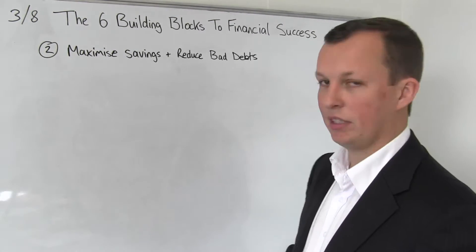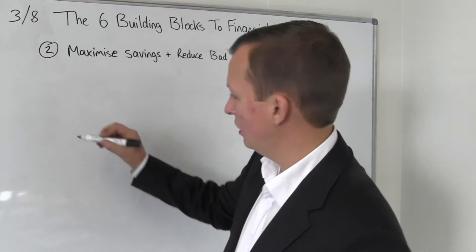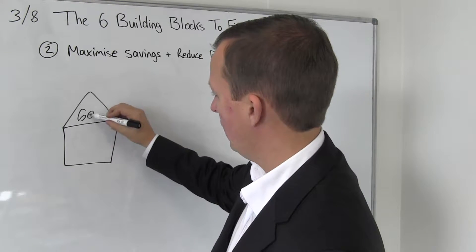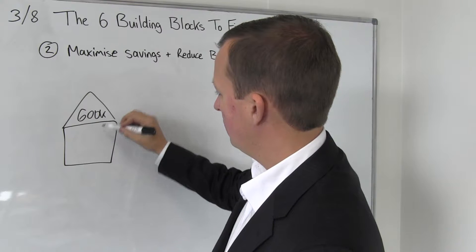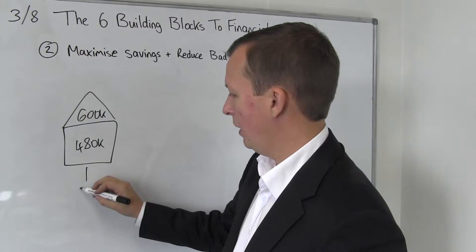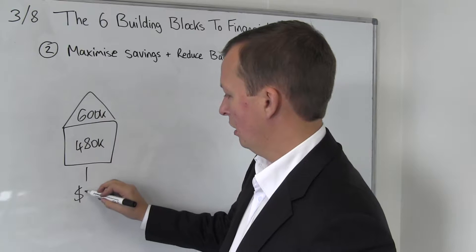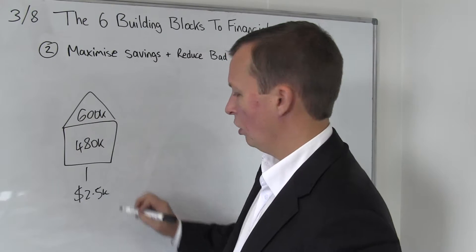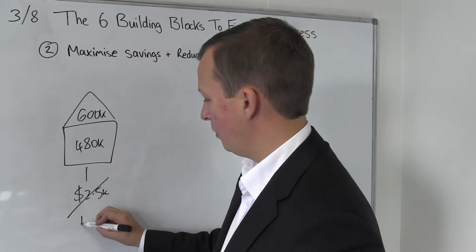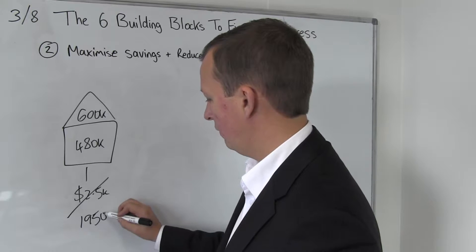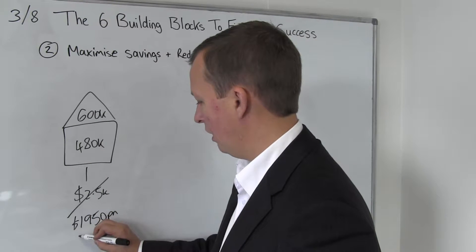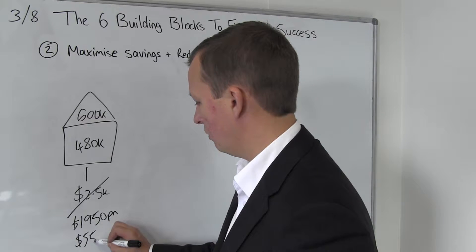We're going to use the previous example where let's say you had a property purchased a few years ago for $600K, the loan on it was $480K, and those repayments are $2,500 a month. You may have decided to go with our new strategy, in which case your repayments are $1,950 a month and we've now got $550 a month to invest.